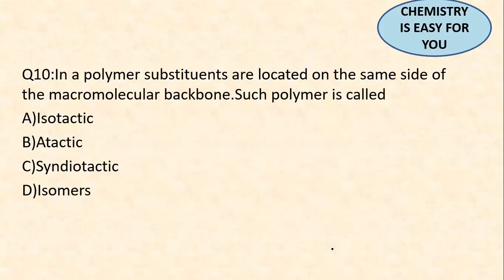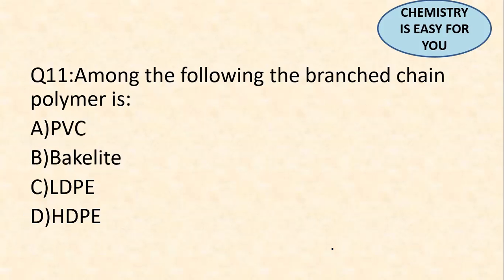Question 10: in a polymer, substituents are located on the same side of the macromolecular backbone. Such a polymer is called isotactic. Isotactic polymers are the type in which polymer substituents are located on the same side of the macromolecular backbone. This was previously asked in GATE and other examinations.